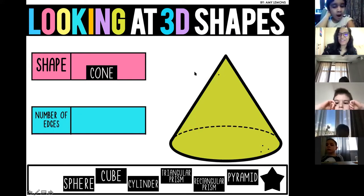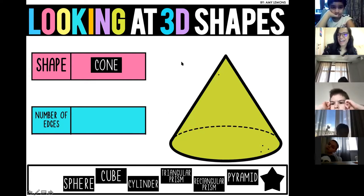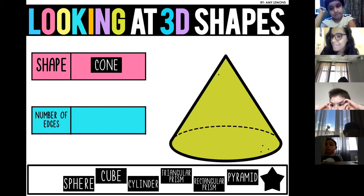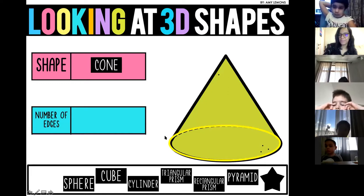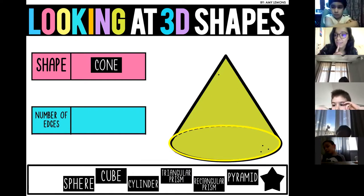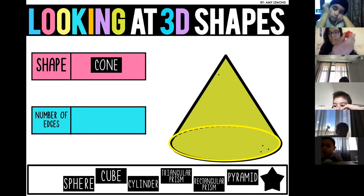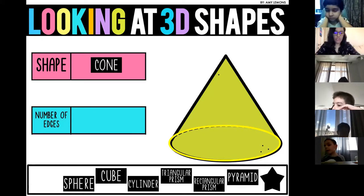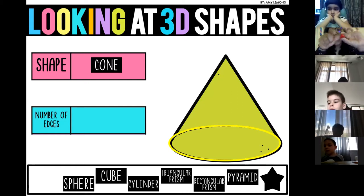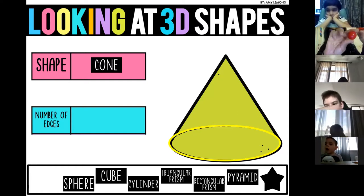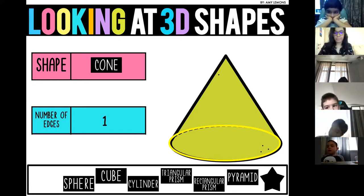Arthur, how many edges does this shape have? Zero — are you sure? It has an edge at the bottom. Remember, it doesn't have to be a straight line; it can be a curved line. This circle is a curved line — wait, no. It goes all the way around, so it has no edges. It has one face only. Actually the cone has one edge.